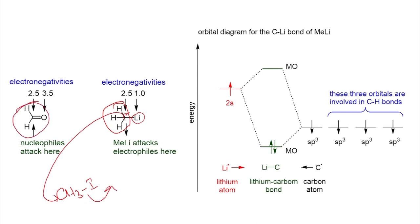For example, if you take formaldehyde, this carbon is electrophilic in nature since the electronegativity of carbon is 2.5 and oxygen is 3.5, so the bond pair is polarized towards oxygen. This carbon is electrophilic, therefore it can undergo addition reaction with this carbonyl compound. We will see in detail the preparation of organolithium reagents as well as the reactions for carbon-carbon bond formation.